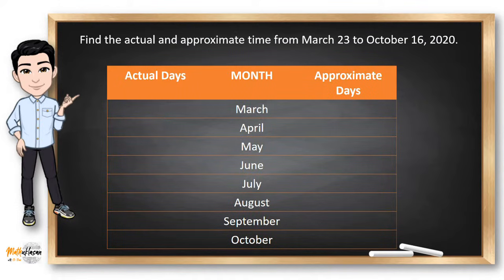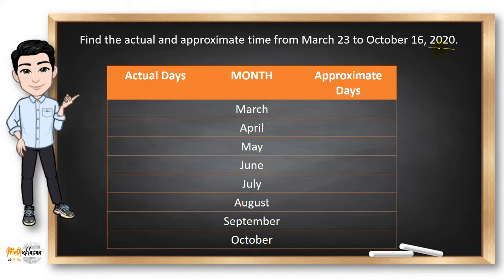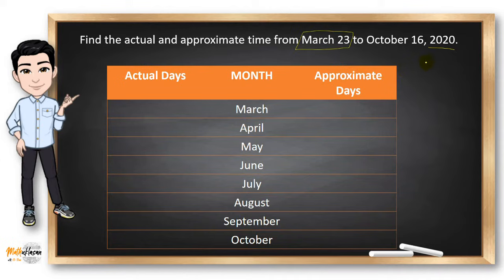Let's have this example. Find the actual and approximate time from March 23 to October 16, 2020. We need to determine the actual number of days and the approximate days for March to October 16, 2020. Note that 2020 is a leap year because it's divisible by 4, but since we are only identifying the number of days from March to October, February will not be a problem. So we start with March, which has 31 actual days in the Gregorian calendar.